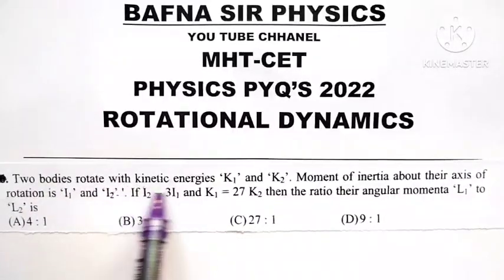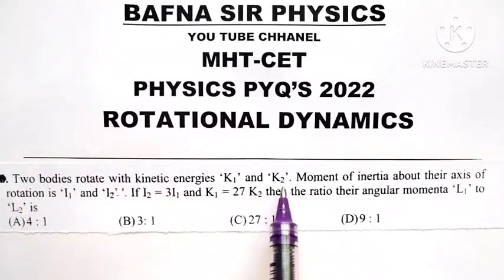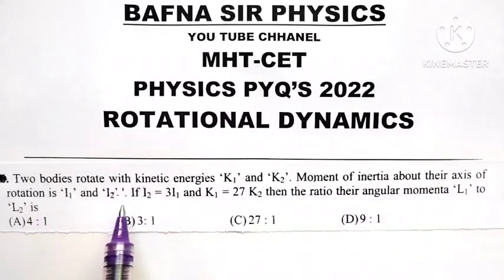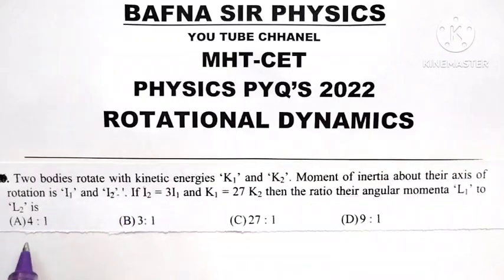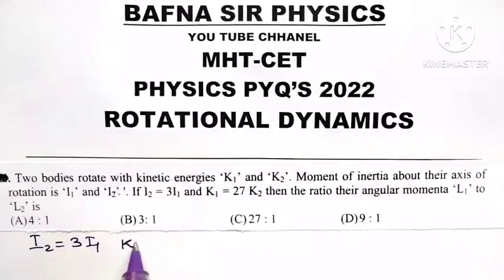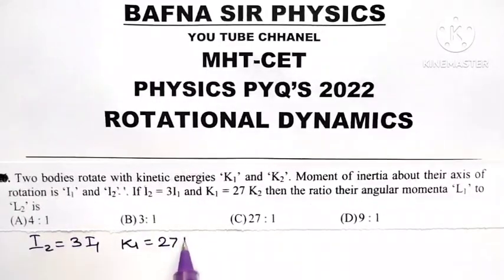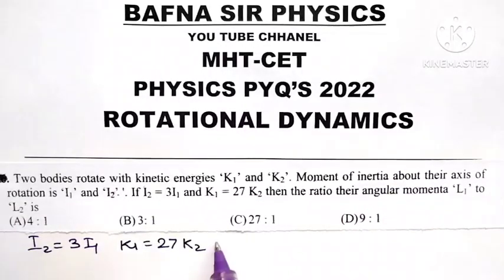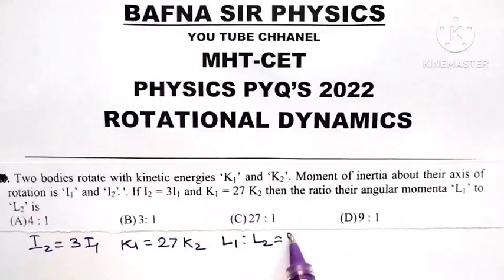Two bodies rotate with kinetic energies K1 and K2. Moment of inertia about their axis of rotation is I1 and I2. If I2 equals 3I1 and K1 equals 27K2, then the ratio of their angular momentum L1 to L2 is equal to question mark.